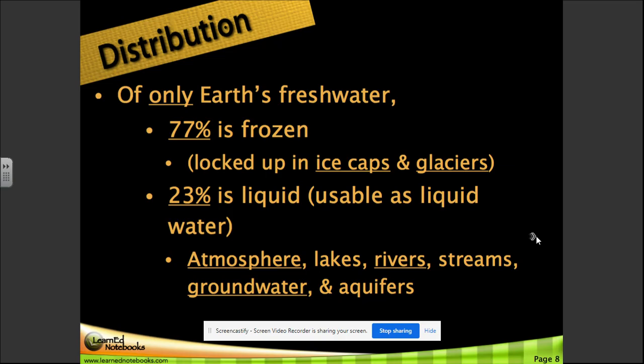Of only Earth's fresh water, 77 percent is frozen, locked up in ice caps and glaciers. 23 percent is liquid, usable as liquid water in the atmosphere, lakes, rivers, streams, groundwater, and aquifers.